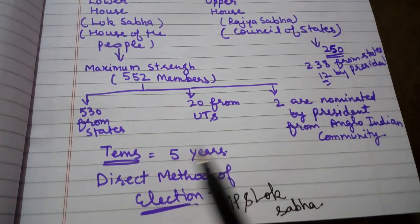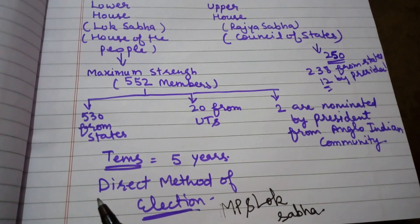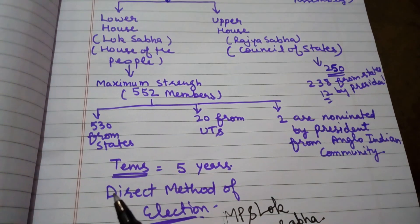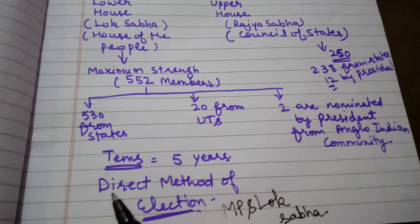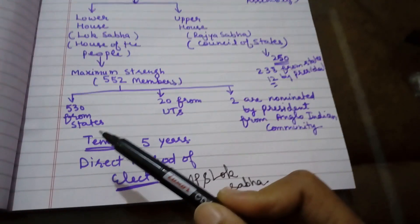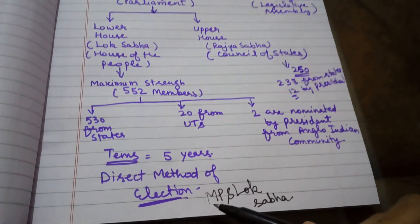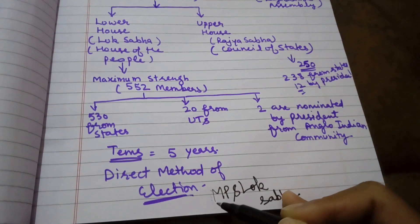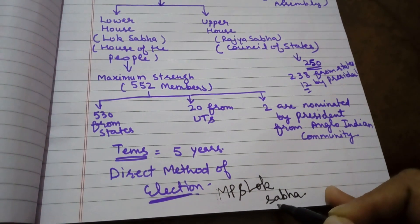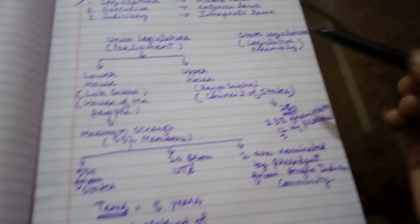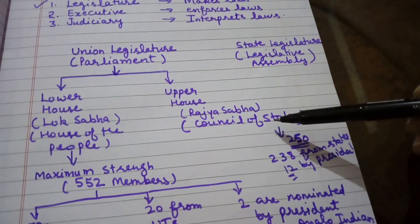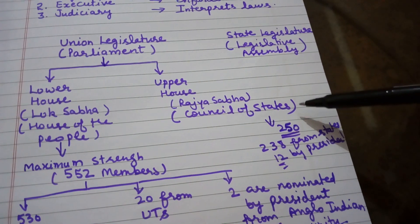Members of the Lok Sabha are elected by the direct method of election and are known as MPs (Lok Sabha). The upper house is known as Rajya Sabha, also called the Council of States.